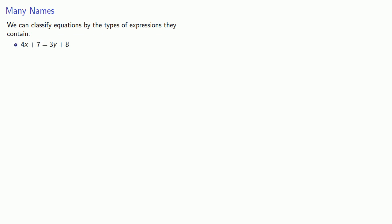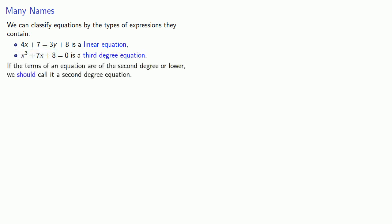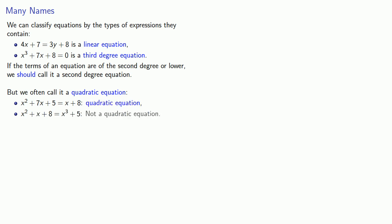An equation where we're equating polynomials of degree 1 is called a linear equation. An equation which deals with a third-degree polynomial is called a third-degree equation. And if the terms of an equation are of the second degree or lower, we should call it a second-degree equation — but we often call such equations a quadratic equation. So this is a quadratic equation, but an equation with a third-degree term would be called a third-degree equation, not quadratic.